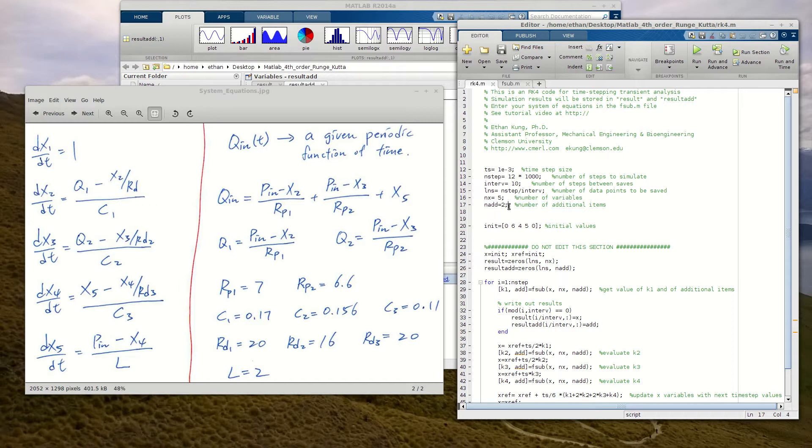And then these two lines allow you to specify the number of variables, the differential variables that you have in your system of equations. In this case, we have five variables that are described by differential equations, so I'm going to put five here.